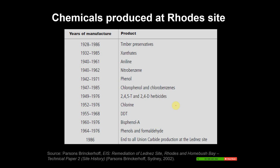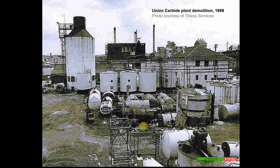From 1928, timber preservatives were produced, and then through the 1940s, 1950s, and 1960s, different dioxins were produced. What basically happened was that manufacturing produced a toxic residue which was distributed around the site. There was very poor stormwater management, so when it rained a lot of the pollutants would just flow off into the surrounding area.